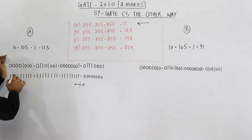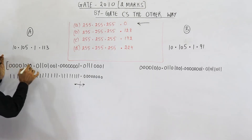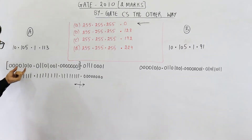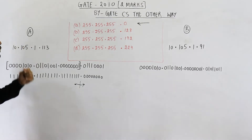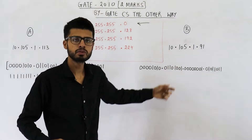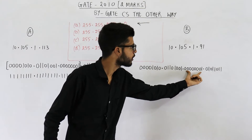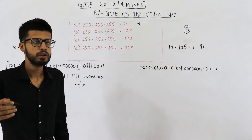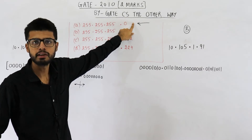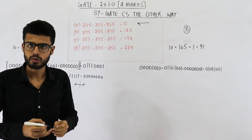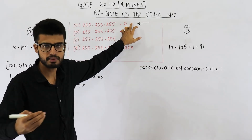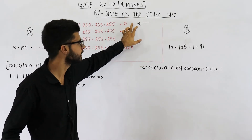This means in the given IP addresses, this part is the network ID. You can see it is 10.105.1 for machine A, and for machine B it is also 10.105.1, because the first three octets are exactly the same. So according to option A, the network ID for A and B is the same, meaning option A is acceptable — this can work.